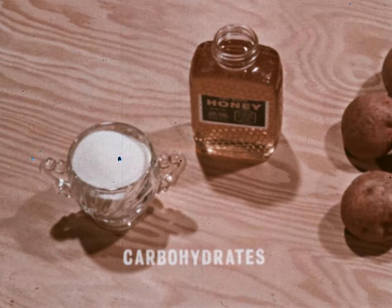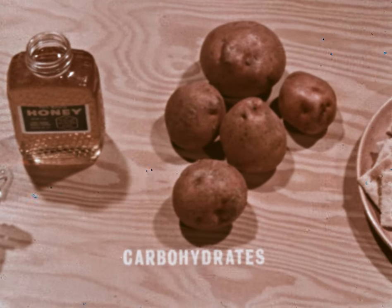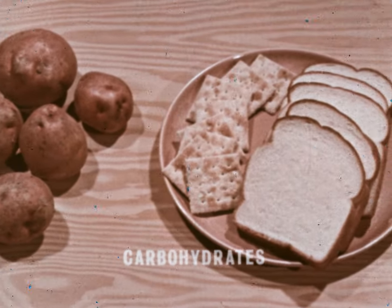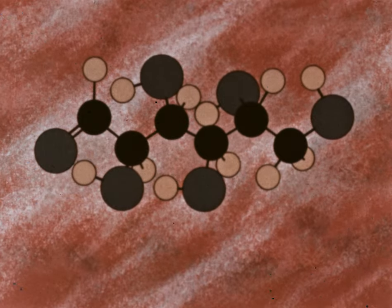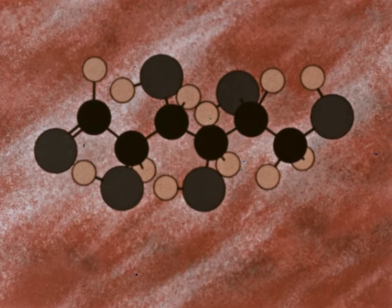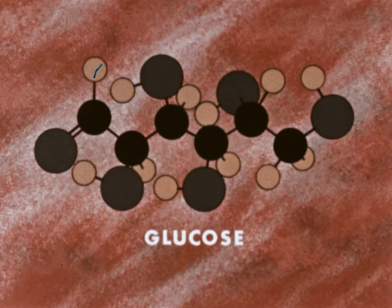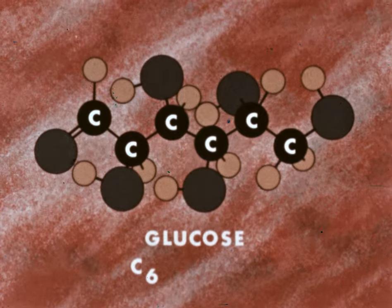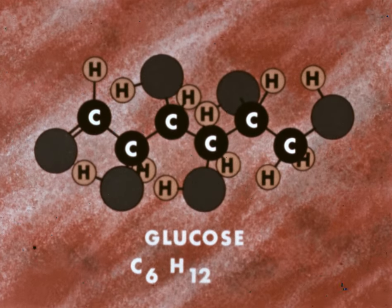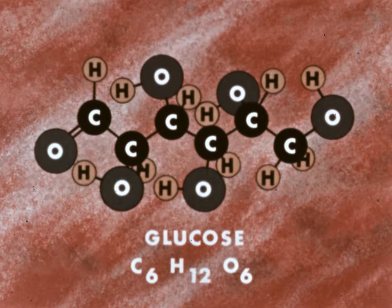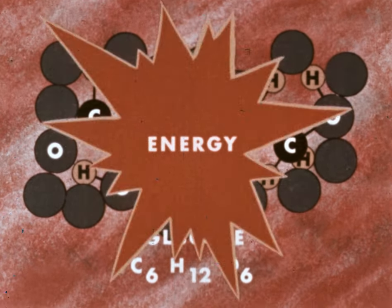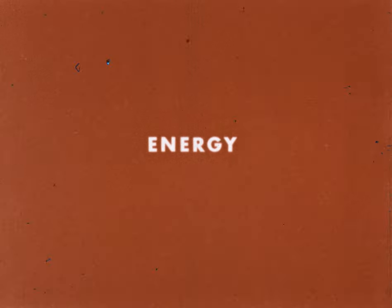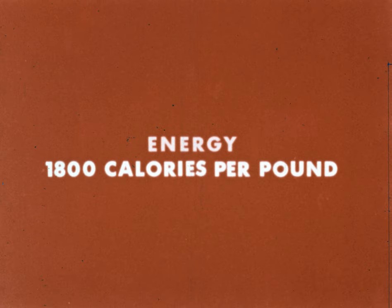Table sugar and honey are pure carbohydrates. Foods rich in carbohydrates include potatoes, crackers, and bread. In the body, complex carbohydrates are digested to molecules of simple sugars. This is a diagrammed molecule of the simple sugar glucose. The diagram shows that the molecule is made up of six carbon atoms, twelve hydrogen atoms, and six oxygen atoms. When the oxygen we breathe combines with a molecule of glucose, energy is released for use by the body. Each pound of glucose or other pure carbohydrate yields about 1,800 calories of energy.